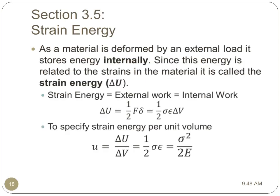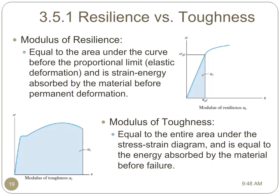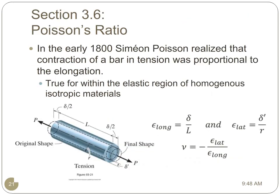As a material is deformed by an external load, it stores energy internally. The internal energy, or the strain energy, must be equal to the external work done on the system. To specify strain energy as a unit of volume, we take the total strain energy and divide by a unit of volume. The equations given here assume a linear relationship between applied load and deformation, and therefore are only valid for the elastic region of materials. Two material properties that describe the ability of a material to absorb energy are the modulus of resilience and the modulus of toughness. The modulus of resilience describes the amount of energy that can be absorbed by a material before it plastically deforms, and the modulus of toughness defines the total amount of energy a material can absorb before it fails.